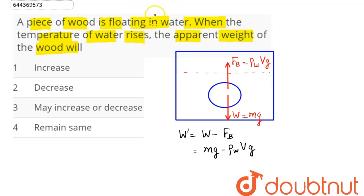Now as we know, on increasing the temperature, as the question says, if temperature increases, then density decreases. So on increasing the temperature, volume increases and density decreases.